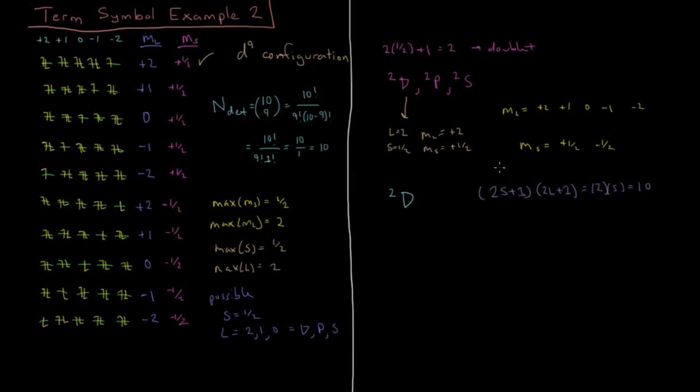Let's demonstrate this. We have 2 plus 1/2, 1 plus 1/2, 0 plus 1/2, minus 1 plus 1/2, minus 2 plus 1/2 - those are all possible values of M_L with M_S plus 1/2. Then plus 2 minus 1/2, plus 1 minus 1/2, 0 minus 1/2, minus 1 minus 1/2, and minus 2 minus 1/2.